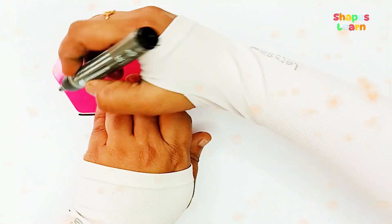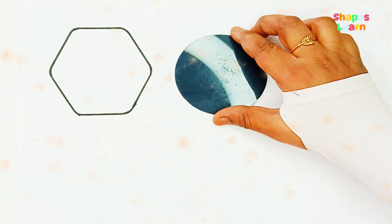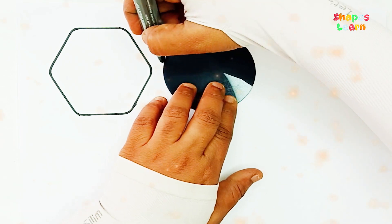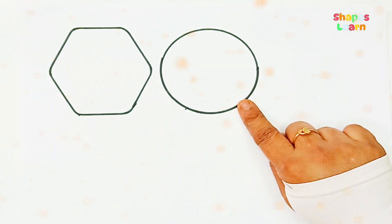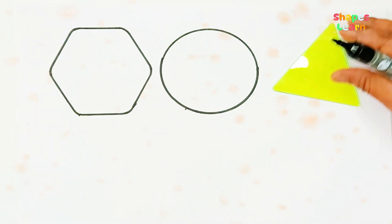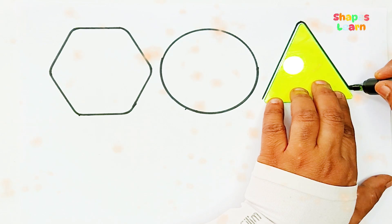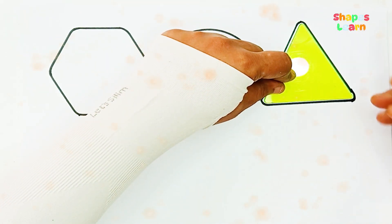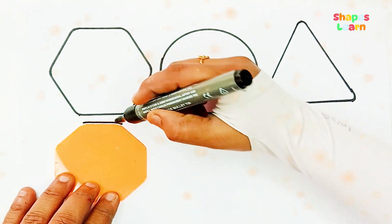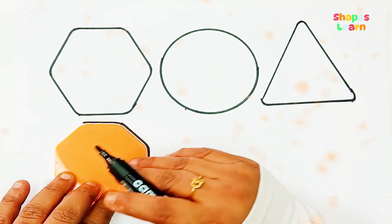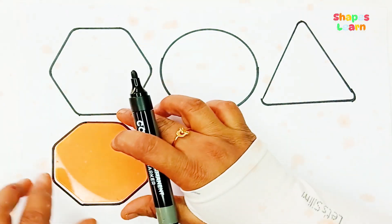Hexagon. Hexagon. Circle — A, B, C, D, E, F, G, H, I, J, K, L, M, N, O, P, Q, R, S, T, U, V, W, X, Y, Z. Now I know my ABCs, next time won't you sing with me? Triangle. Triangle. Triangle. Octagon. Octagon.